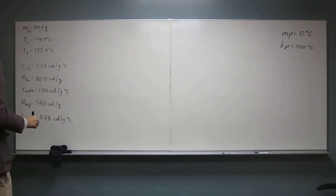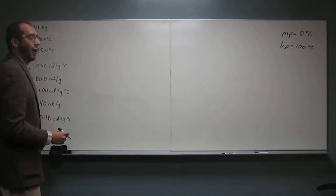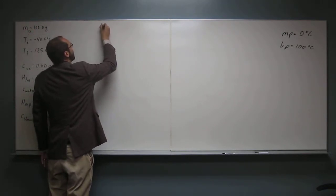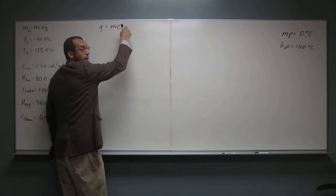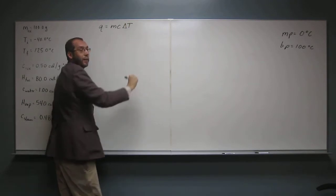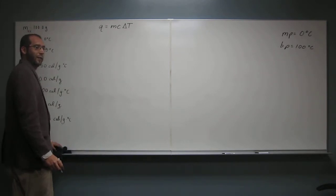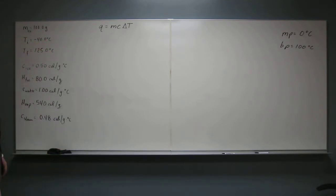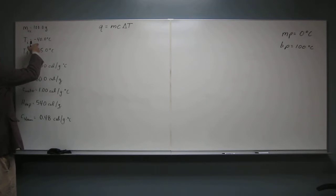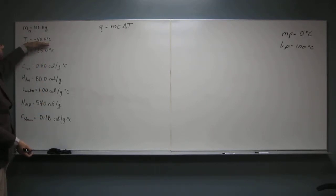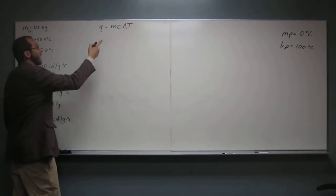Remember the equation for finding the amount of heat: Q, which is heat, equals MC — mass times specific heat — times delta T. Delta T means the change in temperature. So the change in temperature: we've got to get from negative 40 to zero degrees Celsius for the first step.